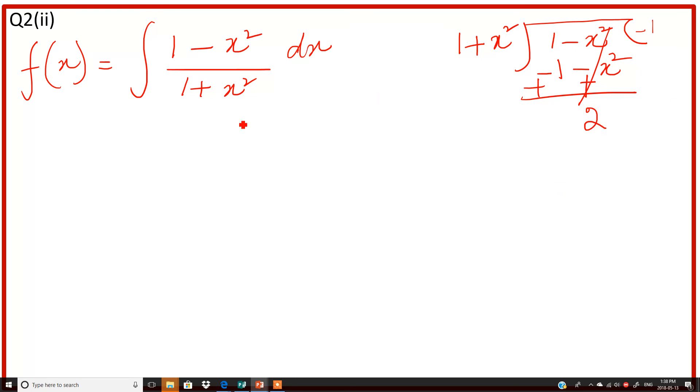Now we have -1 plus 2 divided by (1 + x²) dx. Our question is now much simpler.